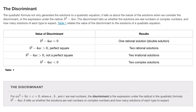The discriminant: the quadratic formula also tells us about the nature of solutions through the discriminant — the expression under the radical, b² minus 4ac. It tells us whether the solutions are real numbers or complex numbers, and how many solutions of each type to expect.